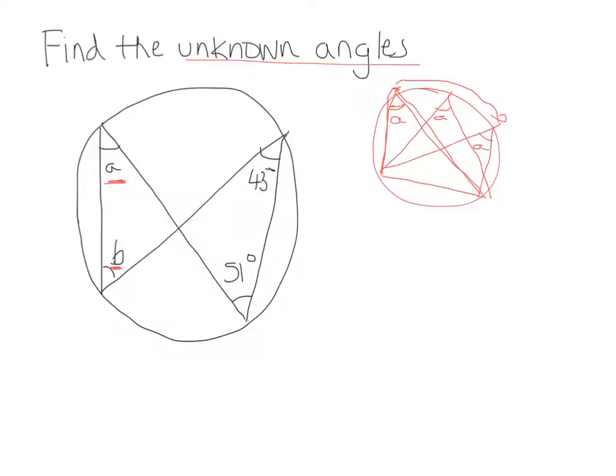So that would mean that if we draw a line in here, we would have exactly the same situation in this one as we do in this diagram. So A would be equal to 43.